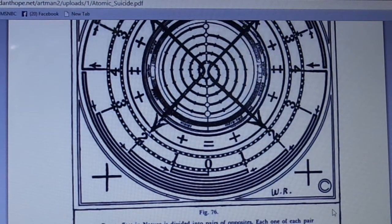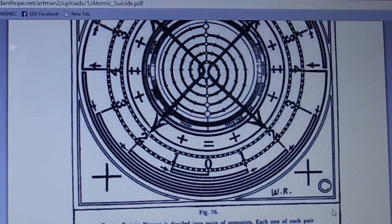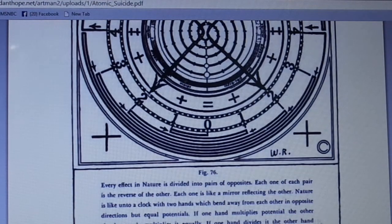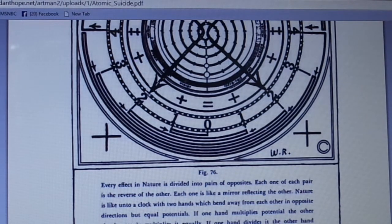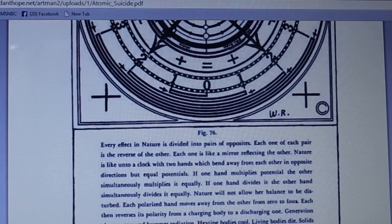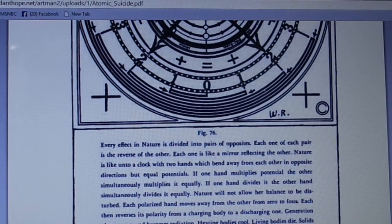Every effect of nature is divided into pairs of opposites; each one of each pair is the reverse of the other, like a mirror reflecting the other. Nature is like a clock with two hands which bend away from each other in opposite directions but with equal potentials. If one hand multiplies potential, the other simultaneously multiplies it equally. If one hand divides it, the other simultaneously divides it equally. Nature will not allow her balance to be disturbed. Each polarized hand moves away from the other from zero to four, then reverses its polarity.